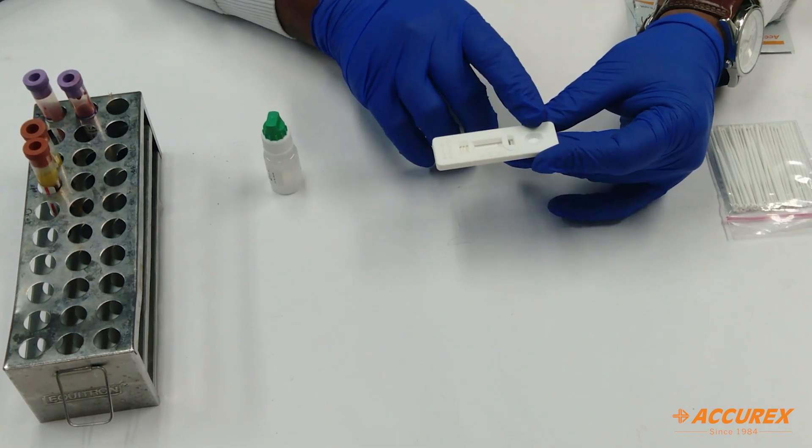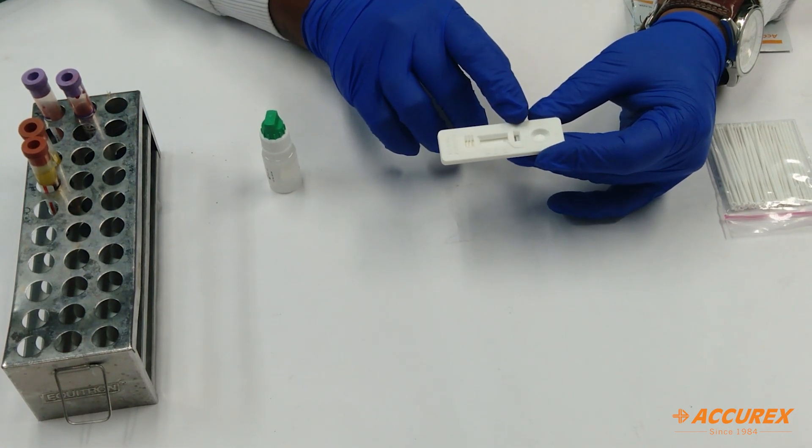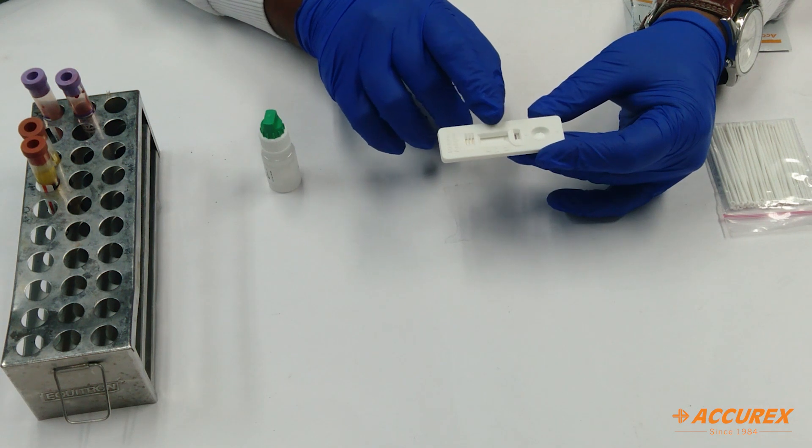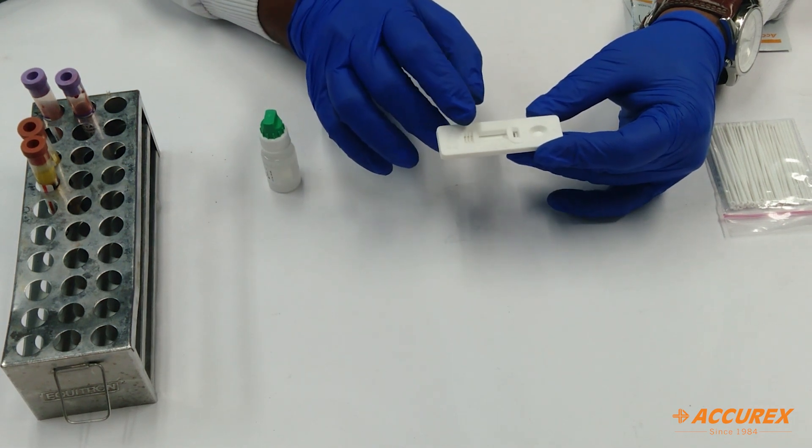The first window is for the buffer. Second is for the sample. You can add whole blood sample over here. Third window is where you can find the results for the Plasmodium falciparum, Plasmodium vivax and the control line.